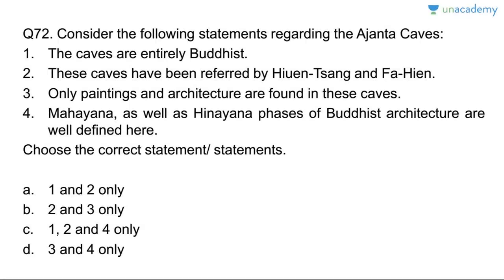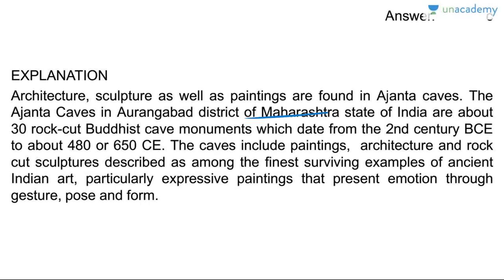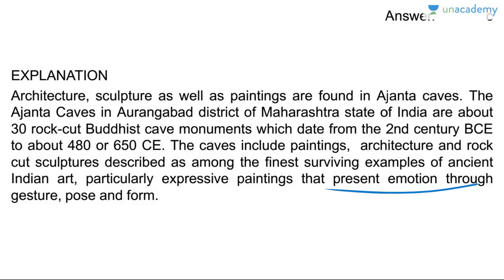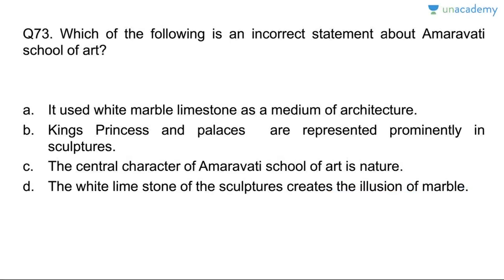Question seventy-two: the Ajanta Caves. The caves are entirely Buddhist — yes. They have been referred to by Hiuen Tsang and Fa Hien — yes. Only paintings and architecture are found — wrong; architecture, sculpture, and paintings are all found there. Both Mahayana and Hinayana phases of Buddhist architecture are well defined. Answer is C, one, two, and four. The Ajanta Caves in Aurangabad district of Maharashtra are about 30 rock-cut Buddhist cave monuments dating from the 2nd century BC to 480–650 AD.